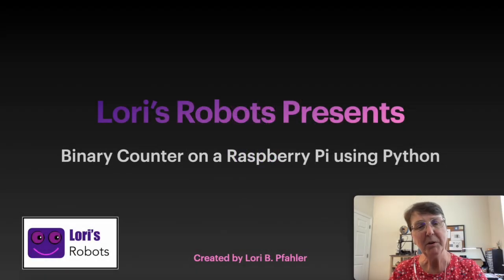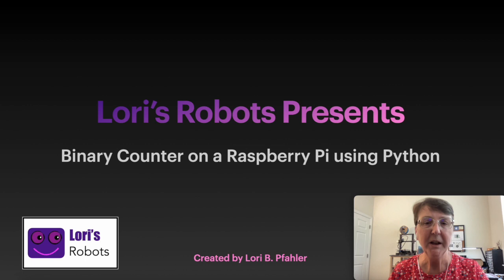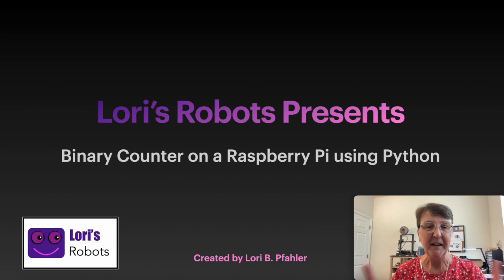Hi, this is Lori and welcome to my project on creating a binary counter with a Raspberry Pi and Python. In this project we'll use five LEDs and we'll count from 0 to 31 in binary using the LEDs as a representation of a binary number with the lights being on and off to represent the zeros and ones.